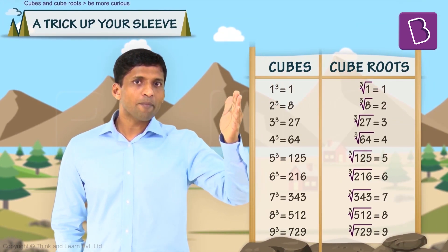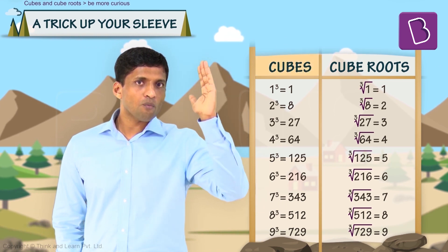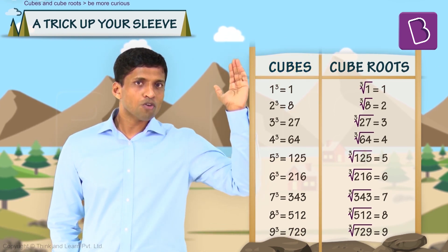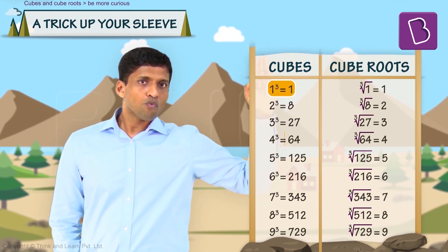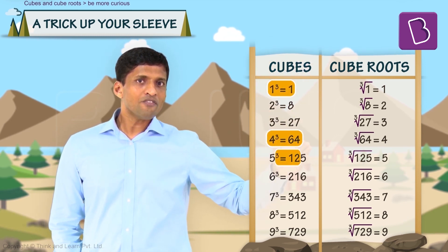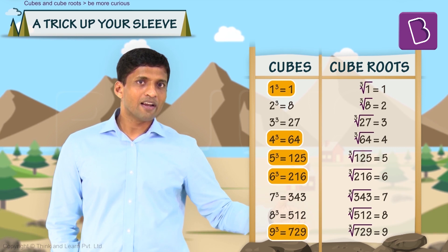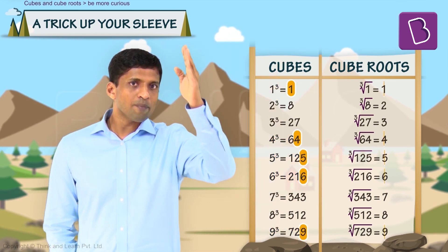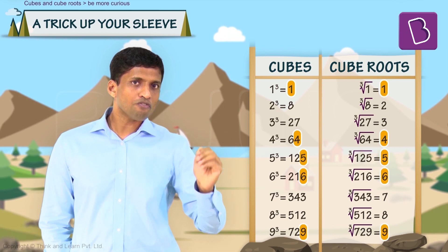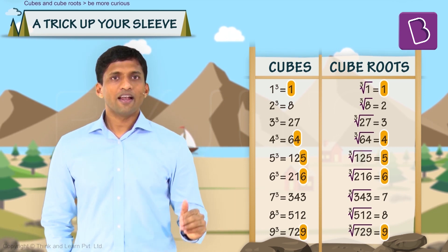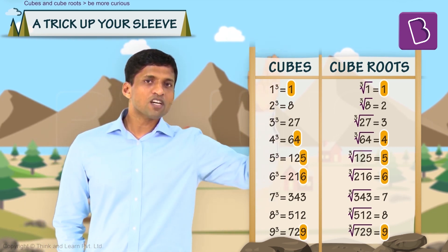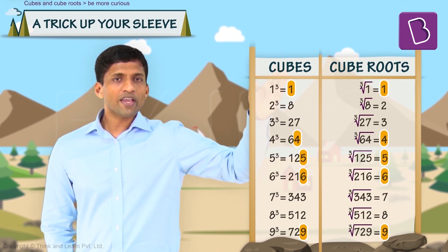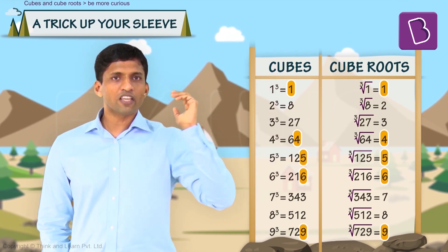Let's look at the table of cubes from 1³ up to 9³. If you observe the unit digits 1, 4, 5, 6, 9 — the cube roots will have the same unit digits. So just by observing the unit digit of the cube, we can find the unit digit of the cube root.